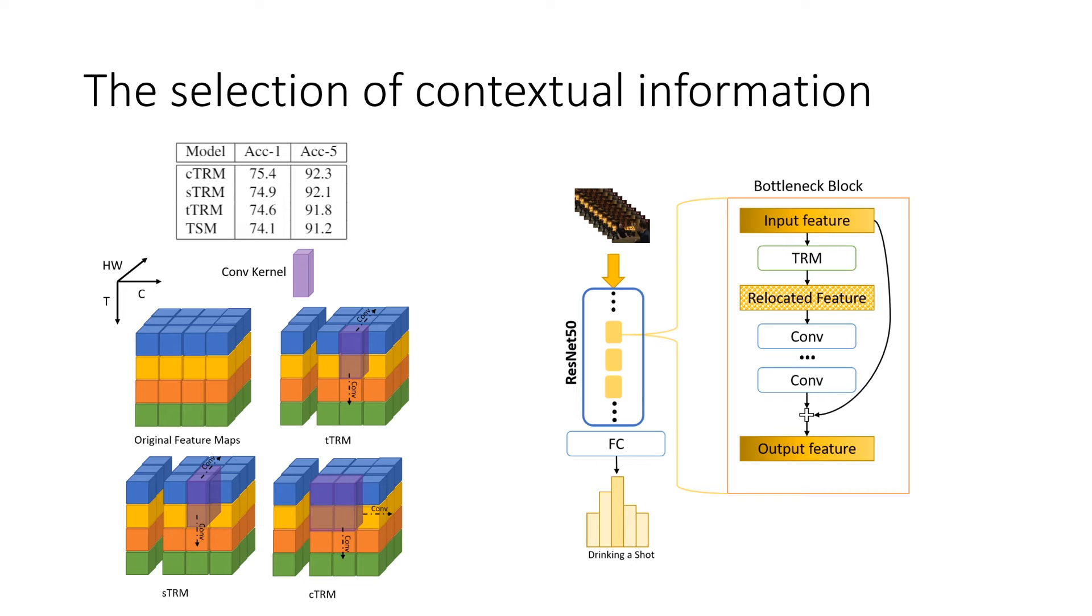Now the only problem left is how do we learn such relocation metrics? Unlike classification tasks which have a very clear target and criteria, it's pretty difficult to evaluate the performance of relocation. Thus, we will directly use the final performance action recognition loss to optimize it. We explored the usage of multiple contextual features. We explored temporal contextual feature, which is TTIM, and spatial temporal contextual feature STIM, and channel temporal contextual feature CTIM. As shown in the table here, all three kinds of TRM outperform the baseline TSM. CTIM performs the best on both rank-1 accuracy and rank-5 accuracy on Kinetics. For the later part, our reported performance will be based on CTIM without special notification.